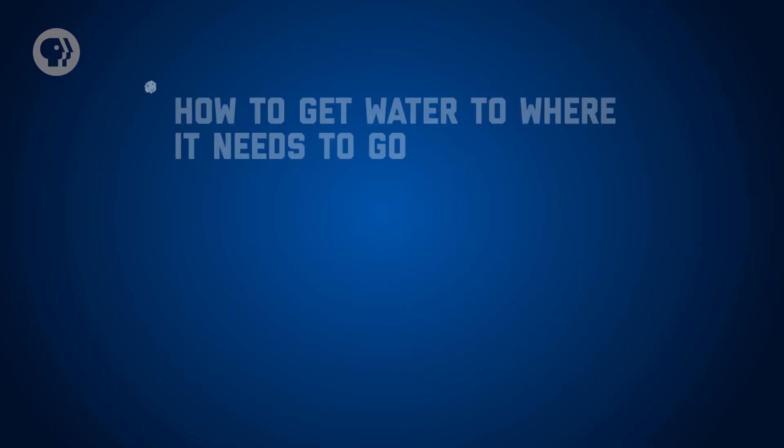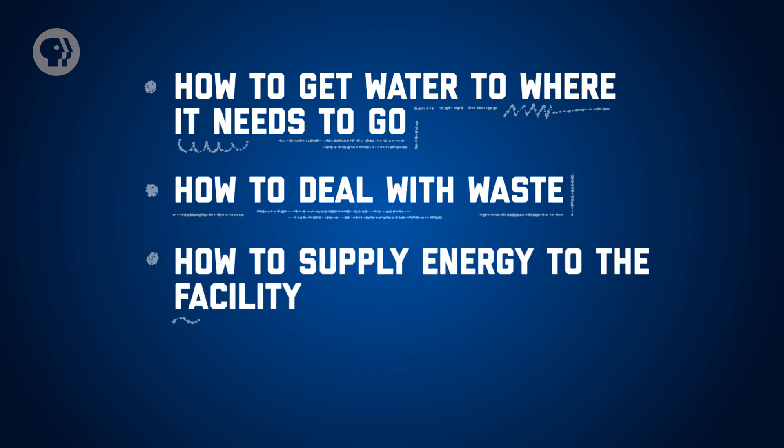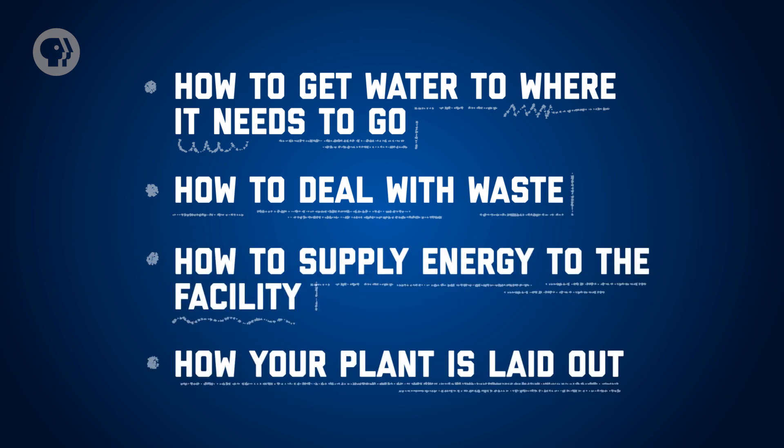What's more, every part will depend on another, so it's not enough to string some techniques together to achieve your goal. Instead, you have to consider the process as a whole, and the entire flow from start to finish. That means thinking about how to get water to where it needs to go, how to deal with waste, how to supply energy to the facility, and even how your plant is laid out. And of course, you'll want to make everything as efficient as possible. It might seem overwhelming to try and tackle all of this at once, which is why engineers use design work to make sense of a complex process.